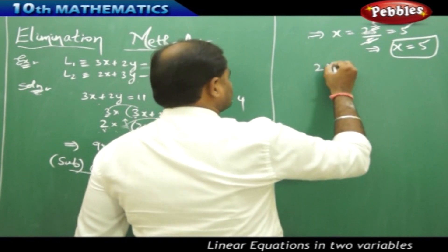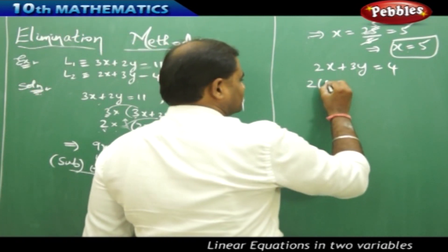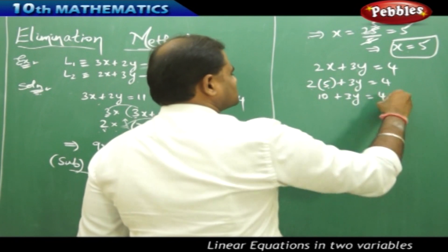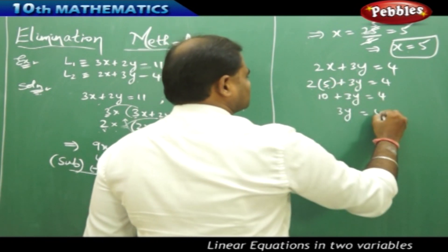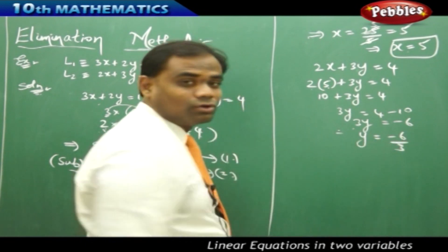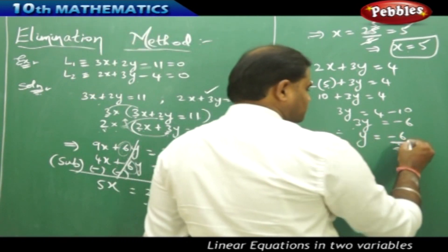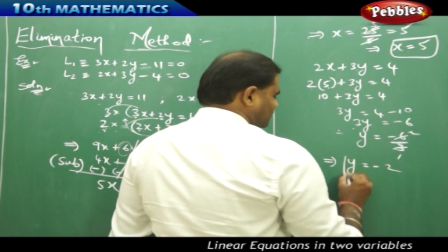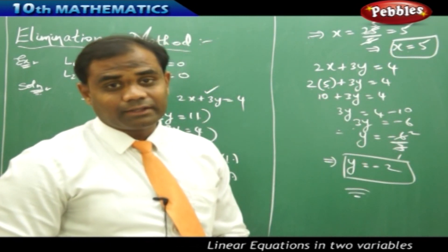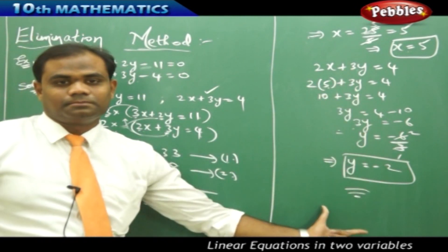Substituting x equals 5 into 2x plus 3y equals 4: 2 times 5 plus 3y equals 4, so 10 plus 3y equals 4, giving 3y equals 4 minus 10 equals negative 6. Therefore y equals negative 6 over 3, which is negative 2. So x equals 5 and y equals negative 2 are the solutions found using the elimination method.